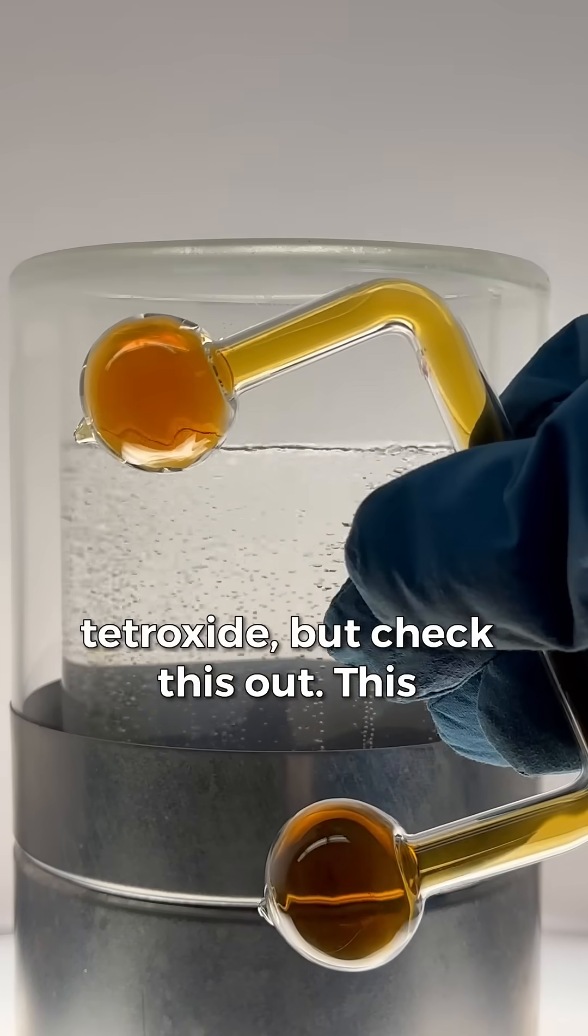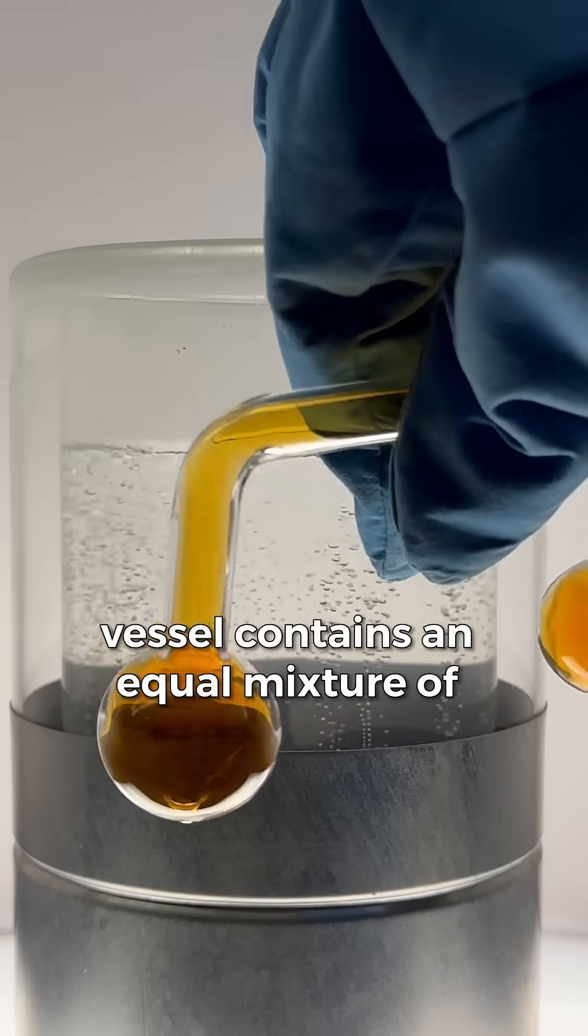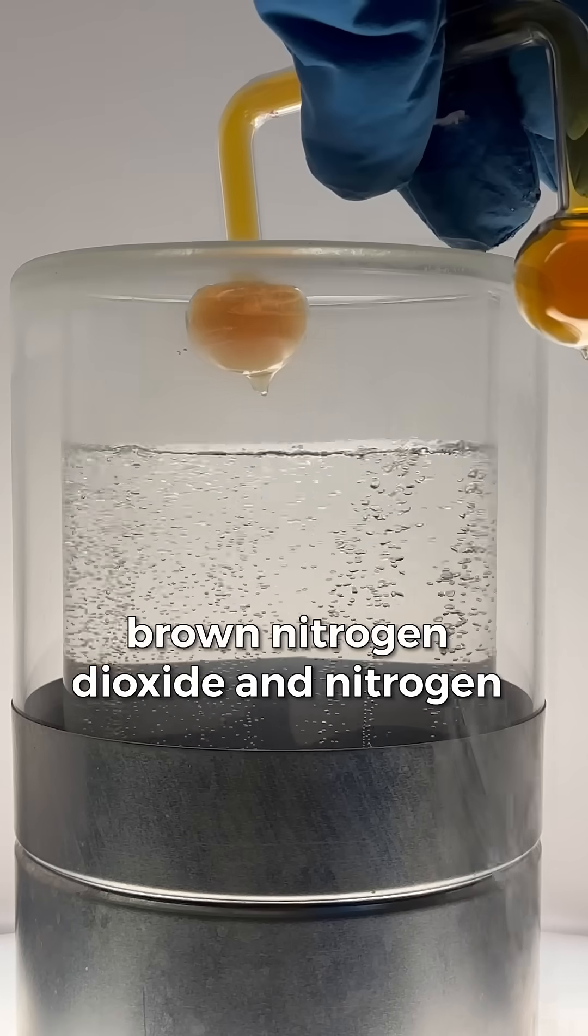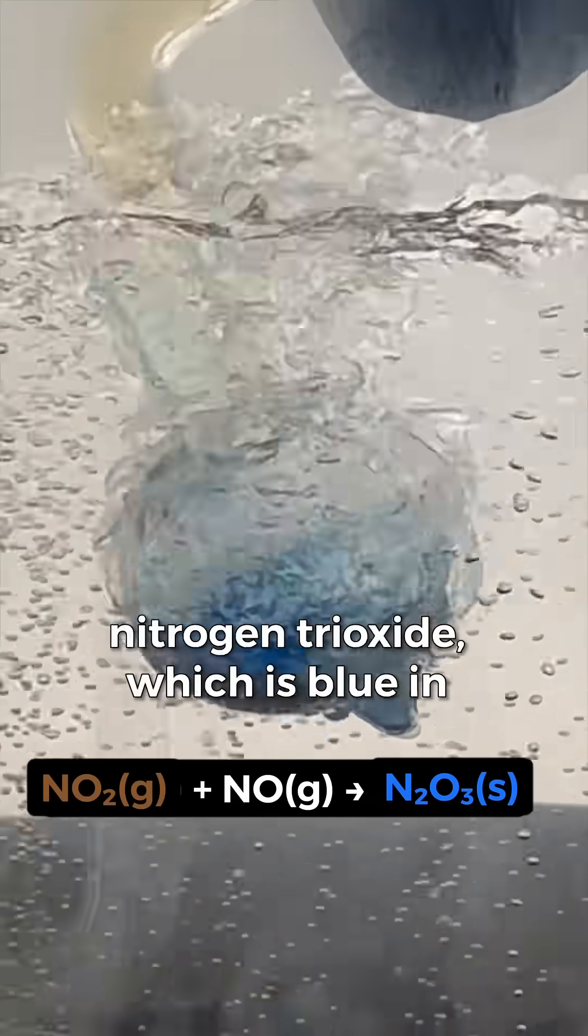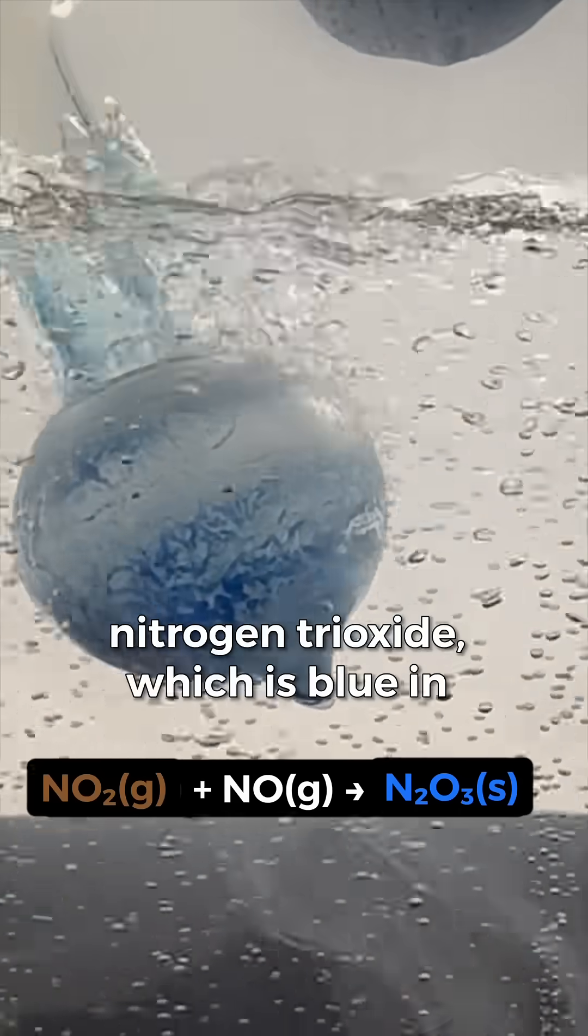But check this out. This vessel contains an equal mixture of brown nitrogen dioxide and nitrogen monoxide. When cooled, these gases react to form dinitrogen trioxide, which is blue in color.